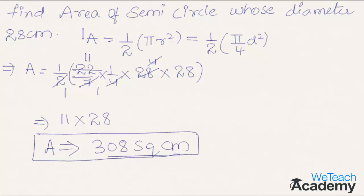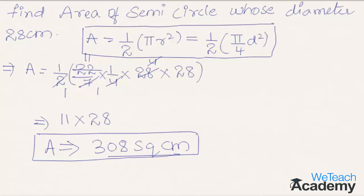Make a note of the formulas. Area of semicircle using radius is equal to 1/2 × π × r². And area of semicircle using diameter is given by the formula 1/2 × (π/4) × d².